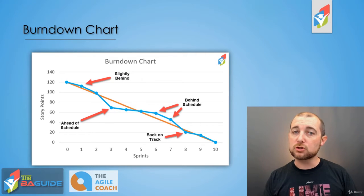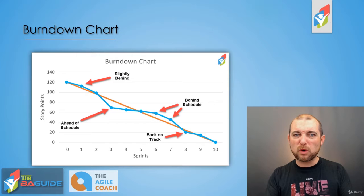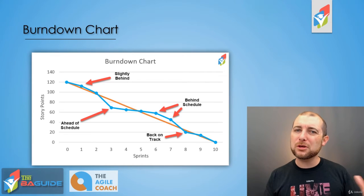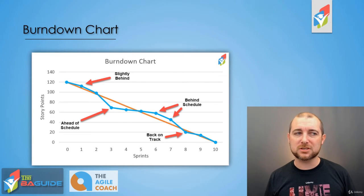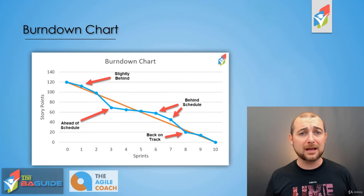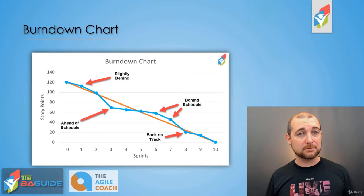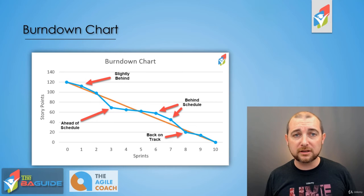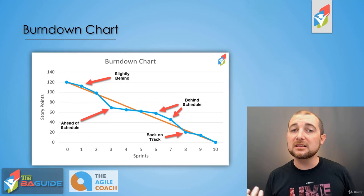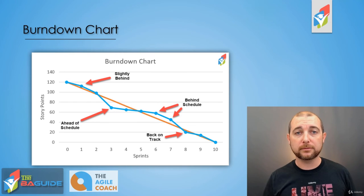The burndown chart was created to help give a visual representation of where you're at, so you can make adjustments. You know if you're behind or ahead — you might be able to add some additional nice-to-have features and stay on the same timeline, or maybe you can move up your delivery date and deliver that overall project value sooner.